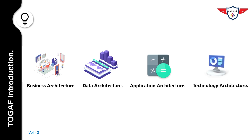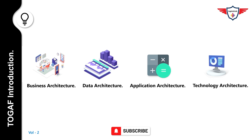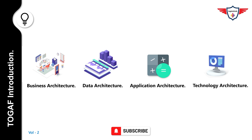The fourth one is technology architecture. Technology architecture describes the logical software and hardware capabilities that are required to support the deployment of business, data, and application services. This includes IT infrastructure, middleware, networks, communications, processing, standards, etc.